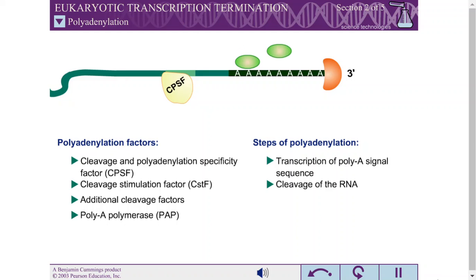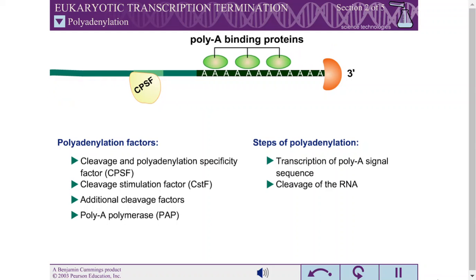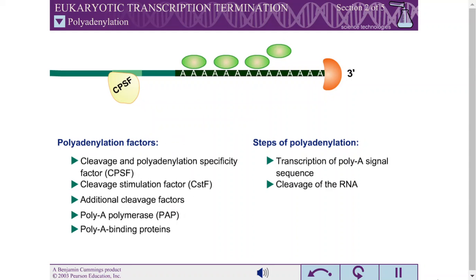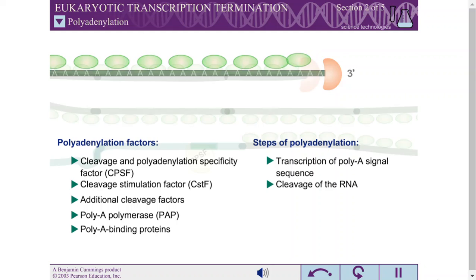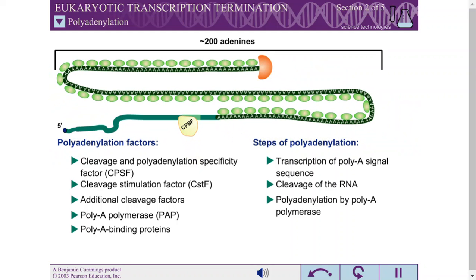PolyA polymerase utilizes the same mechanism as RNA polymerase. However, it does so without a template. It is not clear what determines the length of the polyA tail, but that process involves other proteins that bind specifically to the polyA sequence.